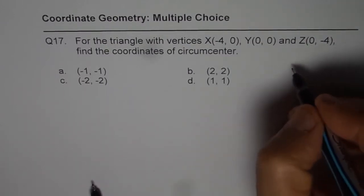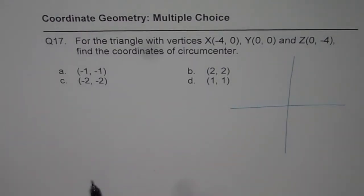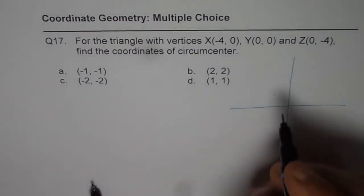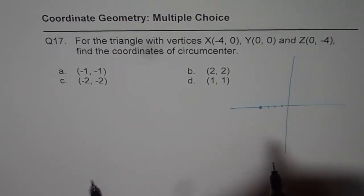Here is how I will do it. So let's make a rough sketch of this situation, and then we'll figure out. Now, X is (-4, 0), so let's say 1, 2, 3, 4, so that is X for us.